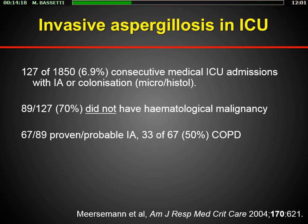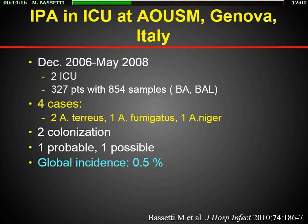So COPD is the first very important risk factor in the ICU. In Genova, I analyzed data from two ICUs over the period 2006 to 2008. We found only four cases of aspergillosis: two colonizations, one probable, one possible. The global incidence in these two classical mixed surgical-and-medical Italian ICUs was very low — 0.5% — lower compared to the data reported from Belgium.